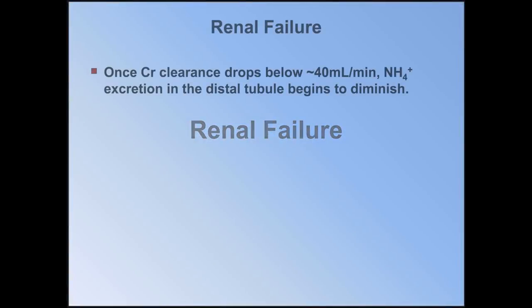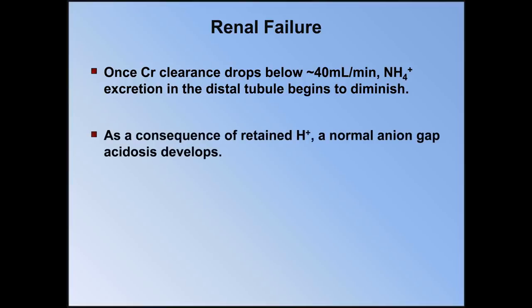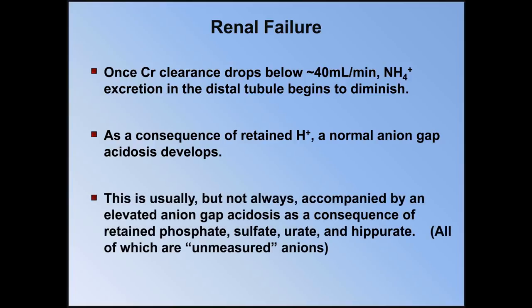In renal failure, once creatinine clearance drops below approximately 40 milliliters per minute, ammonium excretion in the distal tubule begins to diminish. As a consequence of retained hydrogen ions, a normal anion gap acidosis develops. This is usually, but not always, accompanied by an elevated gap acidosis as a consequence of retained phosphate, sulfate, urate, and hippurate, all of which are unmeasured anions. The normal anion gap component of the acidosis can be treated with either oral sodium bicarbonate or with a low protein diet, as protein metabolism is the major source of ammonia.